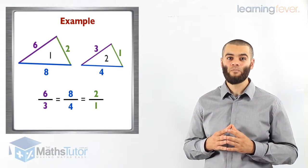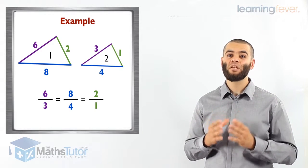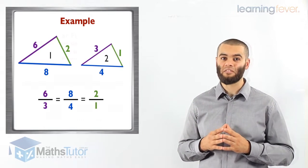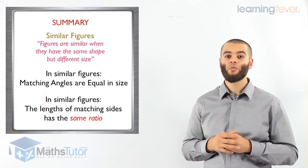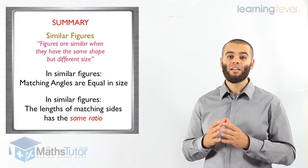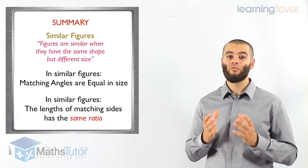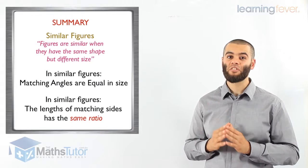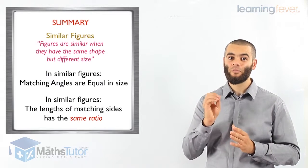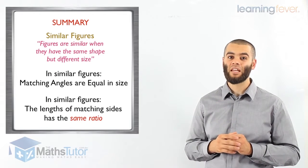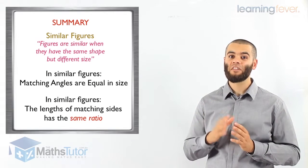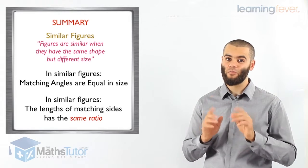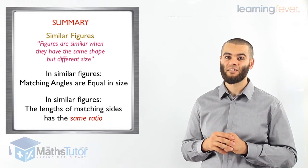They all have the same ratio, which means they are similar figures. We need to remember that similar figures have the same shape but different size — make sure you understand that. You'll find similar figures easy. Same shape, different size — only size.